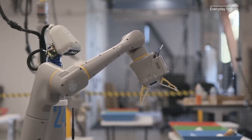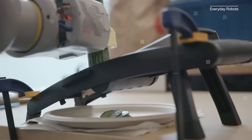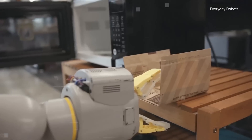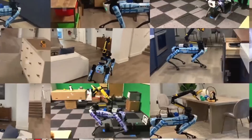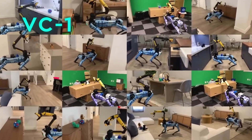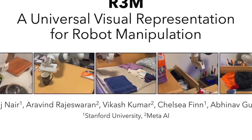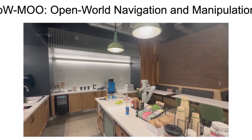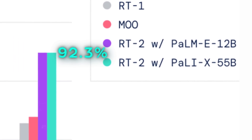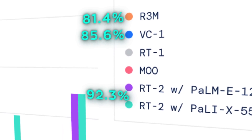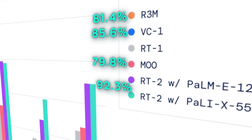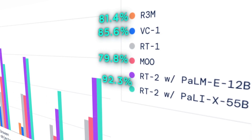RT2 is clearly a major improvement over its previous version. While RT1 could do simple tasks like opening doors or picking up things in an office kitchen, it was restricted to tasks it had seen before. Compared to other models like VC1, which uses vision and language; R3M, which relies on reinforcement learning; and MOO, which uses meta-learning — RT2 shows much better results. In tests measuring a robot's skill at doing tasks based on language commands, RT2 scored 92.3%, while VC1 got 85.6%, R3M had 81.4%, and MOO got 79.8%. Plus, RT2 is more adaptable and stable in new or unfamiliar situations.